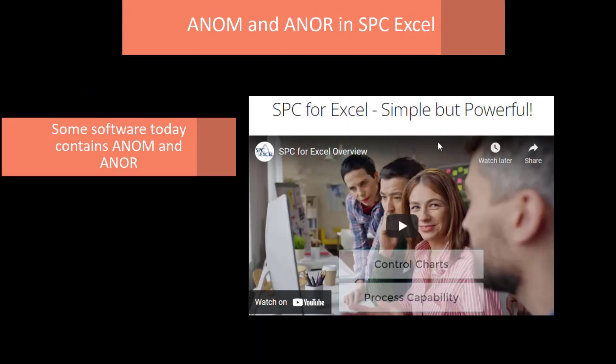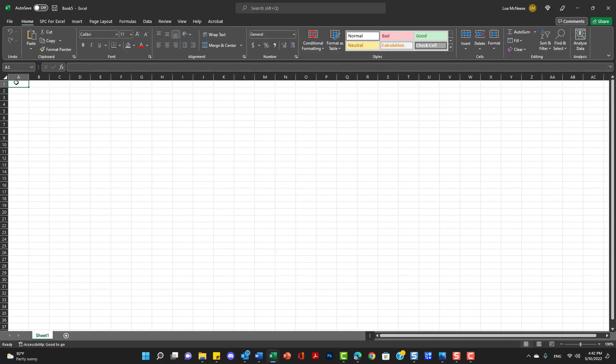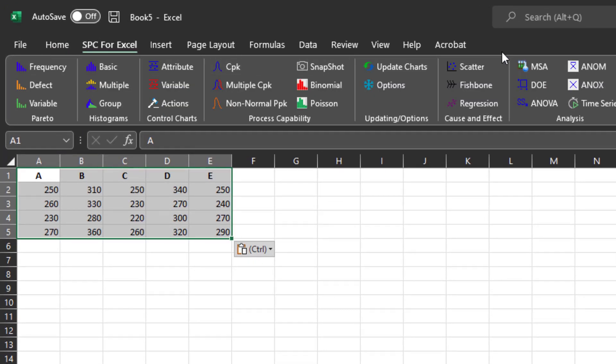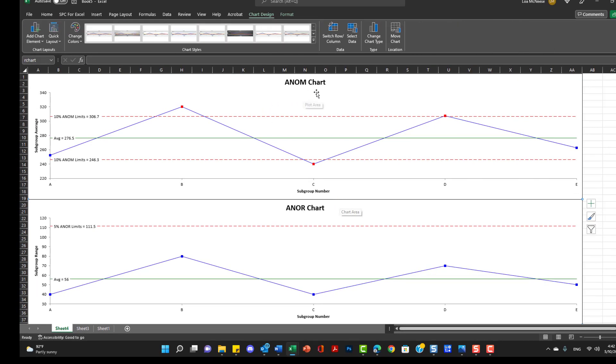If you wanted to make analysis of means, analysis ranges in the SPC for Excel software, it's easy to do. Some software today comes with it. The SPC for Excel does. You simply put your data into an Excel spreadsheet, as shown here. Same data we used. You pick analysis of means from the SPC for Excel toolbar. Put in your scaling factors. We'll use 10 and 5 percent. And there you get your charts, your visual picture. And it's easy to see on the analysis of means chart that you have three out-of-control points, things that are beyond the detection limits. We have the upper and lower detection limit here. While the analysis of ranges chart, everything is in control, which means you didn't have any special causes during the experiment, and that these results are valid.